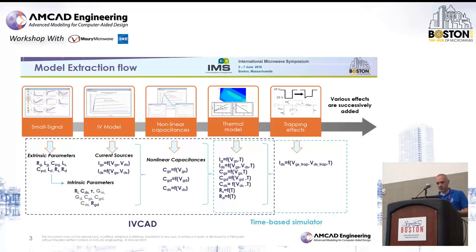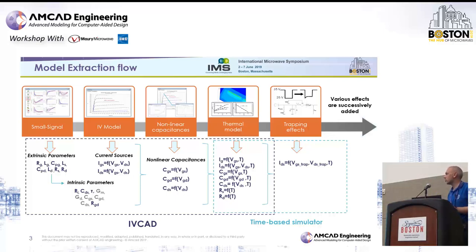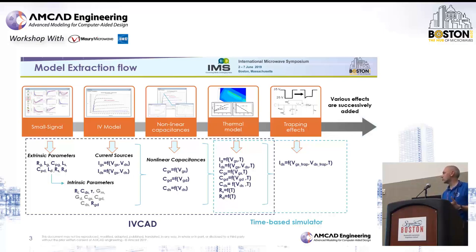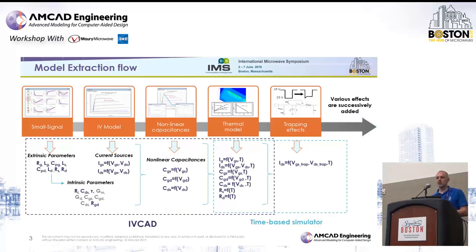To extract such a model we cover different steps. The first is to extract a small signal model — extracting the extrinsic parameters to find a good set of intrinsic parameters. We also extract the nonlinear current source model, such as the drain current as a function of gate voltage, then the nonlinear capacitances. We address the thermal behavior of the model, and for gallium nitride technology, we address the trapping effects.